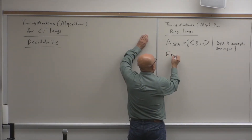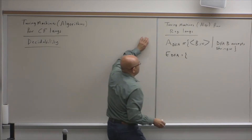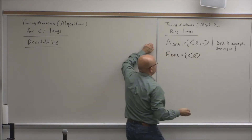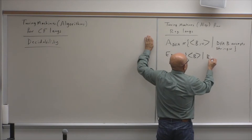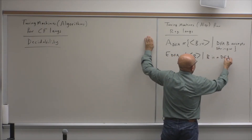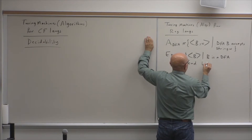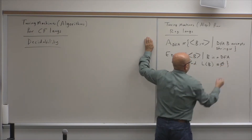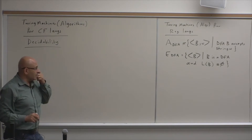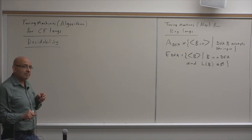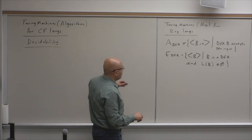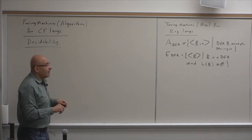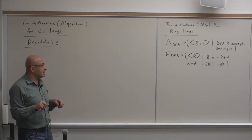The E_DFA is the language of DFA B where L(B) is empty — L(B) equals phi. We constructed a Turing Machine for this: mark reachable states from the start state, and if an accept state is reached, then the language is not empty.